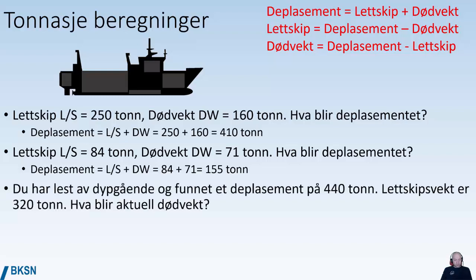We have read the draft marks and found the displacement of 440 tons. The light ship weight is 320 tons. What is then the actual dead weight for this condition? It is displacement minus light ship — in this case we get a dead weight of 120 tons.